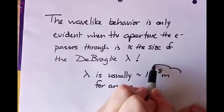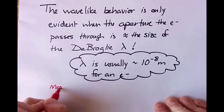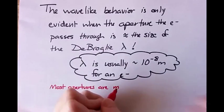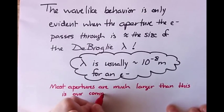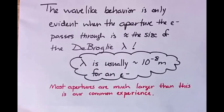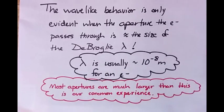So a typical electron's de Broglie wavelength is like 10 to the minus 8 meters. That's very, very small. So if we need an aperture about the size of the de Broglie wavelength in order to notice the wave-like behavior of an electron, that means we need an aperture that's about 10 to the minus 8 meters wide. That's very, very small. And we definitely don't see apertures or interact with apertures that are that small in everyday life.